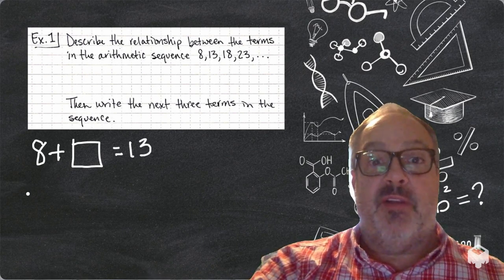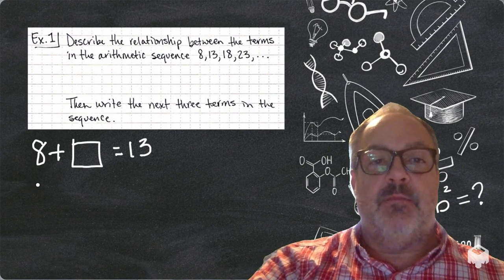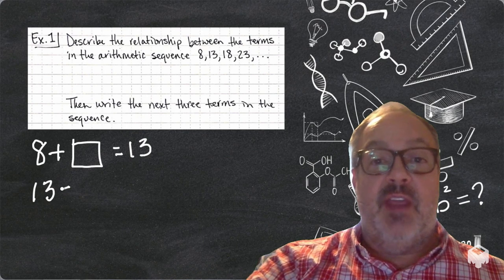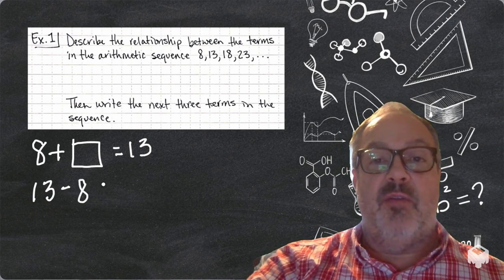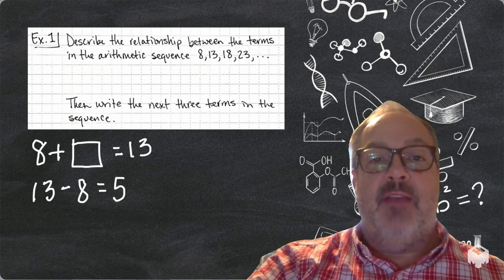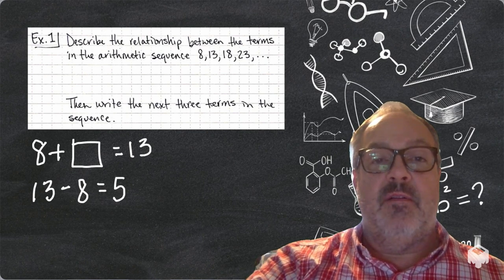So, we have 8 plus some number is 13. If I didn't know what that was, I could use the inverse operation and do 13 minus 8 is 5. So, I now know that to go from 8 to 13, I'm adding 5 to that.